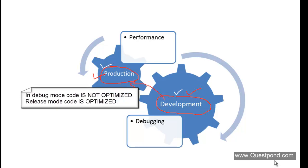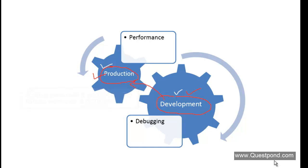The biggest difference between Debug and Release mode is that in Debug mode the code is not optimized, while in Release mode the code is optimized. To understand this difference, let us see a simple example. This is the first difference; there is one more difference we will talk about later. Let us first try to see how the code is optimized between Debug and Release.